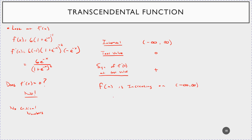There are no relative extrema. So it's also really interesting — the function is always increasing but will approach two horizontal asymptotes. Now the really hard part begins: the second derivative, and this is going to involve a lot of algebra.